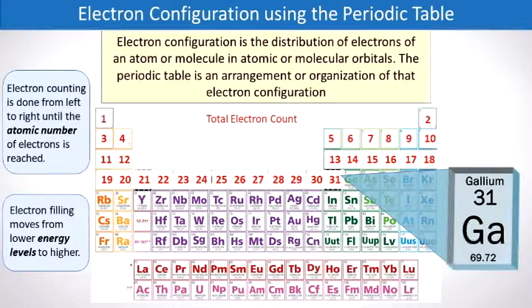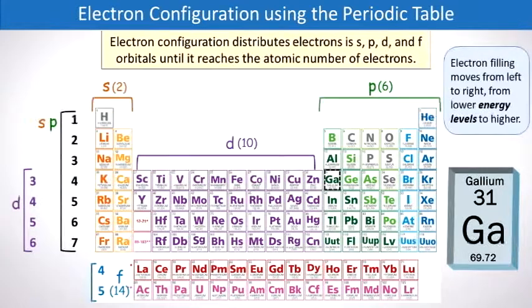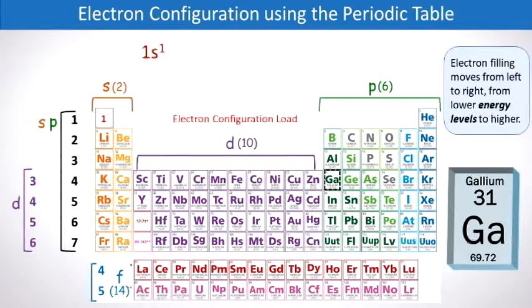Next, let's distribute that total electron count into its respective orbitals. And this is how we do it. We start again with 1s1, and note that it's 1s2 because helium only has an s orbital.